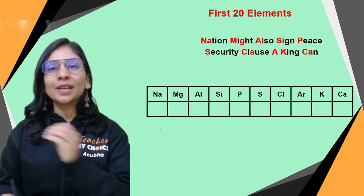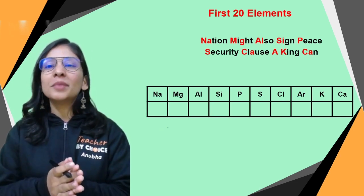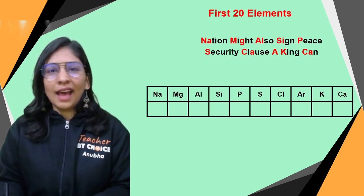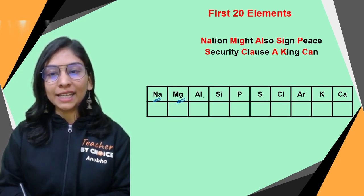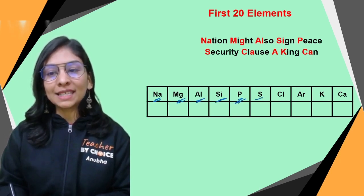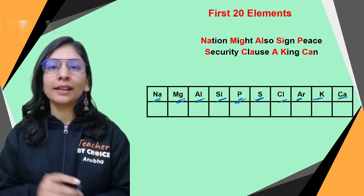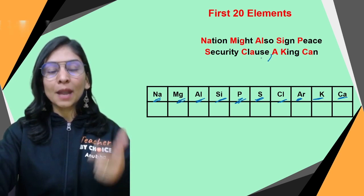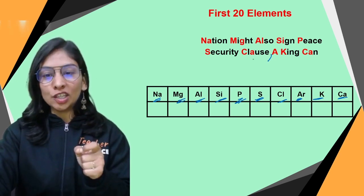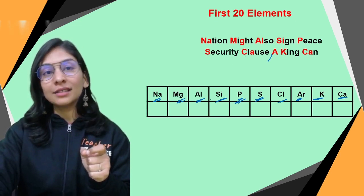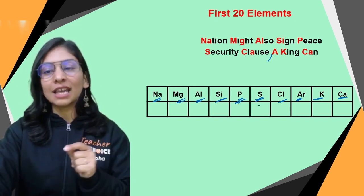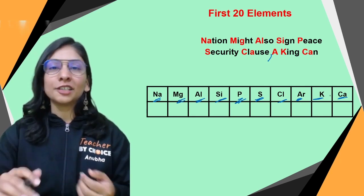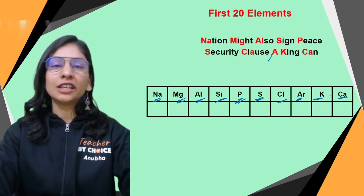For elements 11 to 20 (Sodium to Calcium): 'Nation Might Also Sign Peace Security Clause A King Can' — Na (Sodium), Mg (Magnesium), Al (Aluminium), Si (Silicon), P (Phosphorus), S (Sulfur), Cl (Chlorine), Ar (Argon), K (Potassium), Ca (Calcium). Easy peasy!